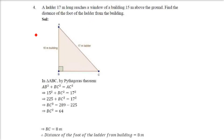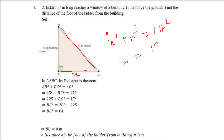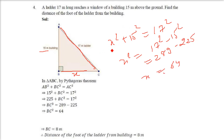A ladder 17 meters long reaches a window of a building 15 meters above the ground. Find the distance of the foot of the ladder from the building. This is a 15 meter building and a 17 meter ladder, and we have to find the distance X. Using Pythagoras theorem: X square plus 15 square equals 17 square, so X square equals 289 minus 225, which is 64. X equals the square root of 64, that is 8 meters.